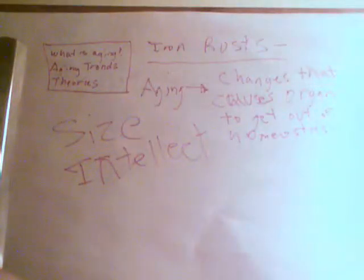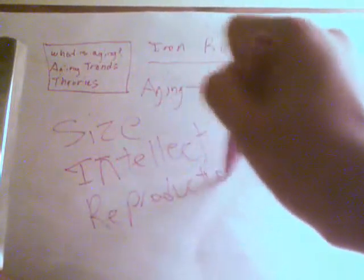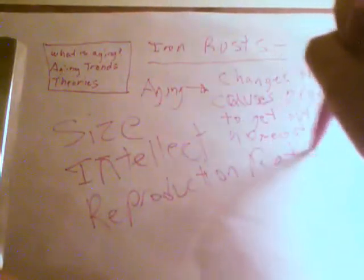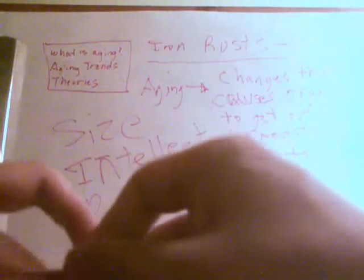Another trend is intellect — smarter animals tend to live longer. Comparing chimpanzees and humans versus flies, we live a lot longer. Another factor is reproduction rate.